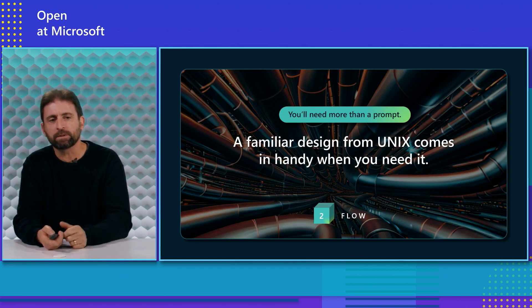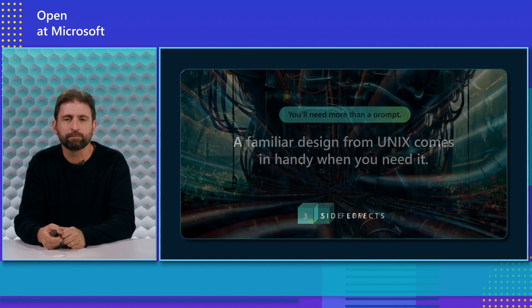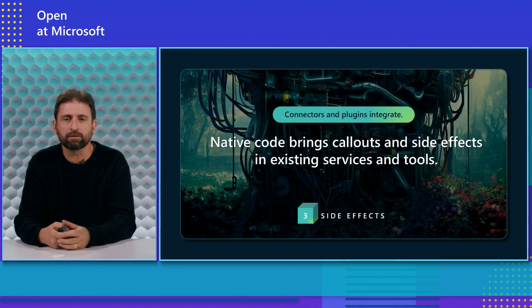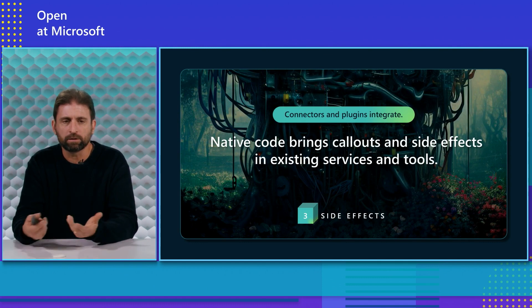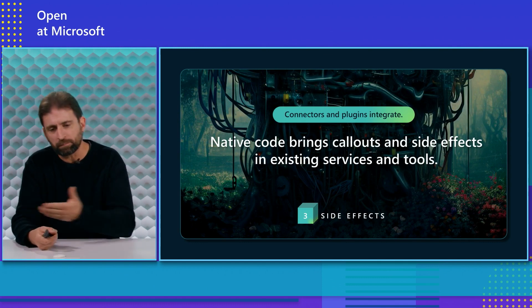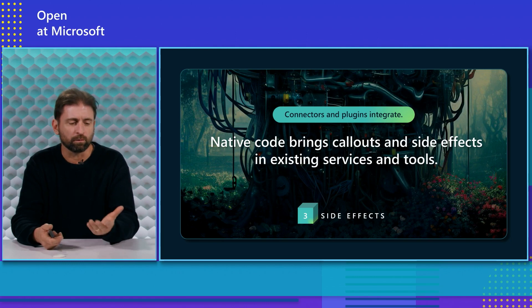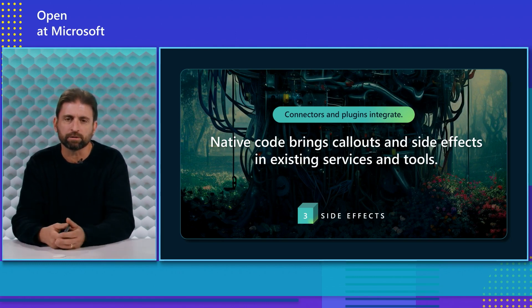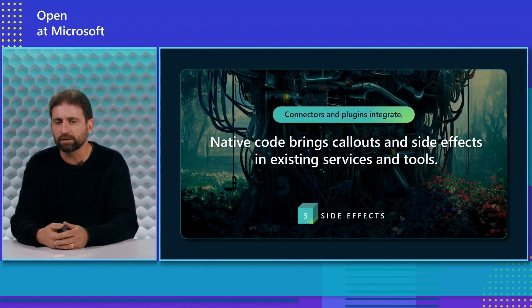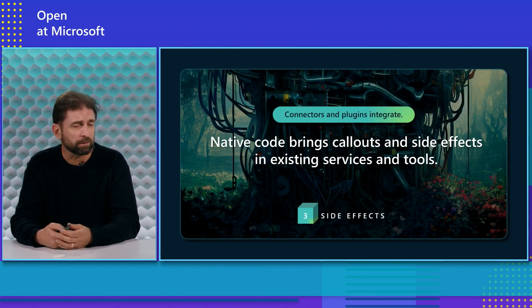That's a whole new regime that's beginning to open up. And the last thing, of course, is side effects. Having call outs to native code means you can actually do things like page through a database and do stuff with the LLM, or call out to other kinds of functions and services. This is going to become increasingly important, and we're doing a whole lot of it with Microsoft.